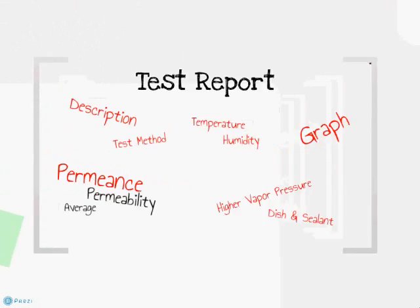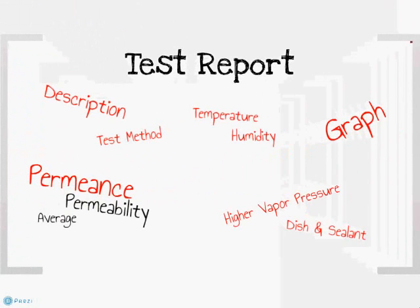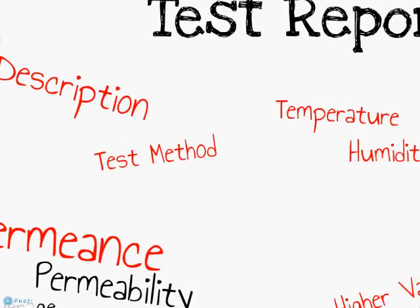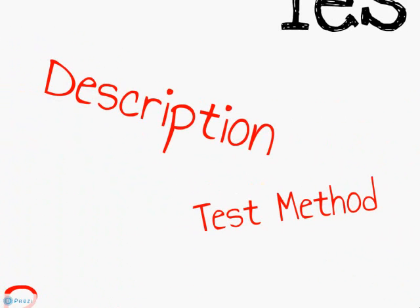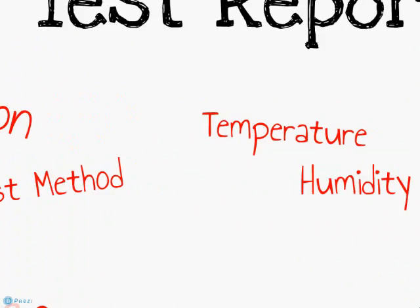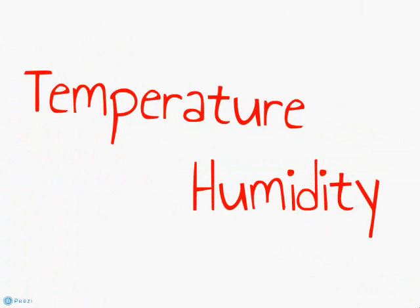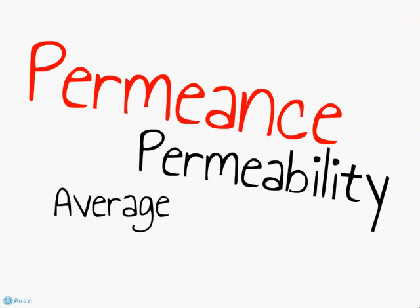The test report for the results of ASTM E96 should contain, at a minimum, a description of the material tested, the test method used, the temperature and relative humidity of the test chamber, the permeance and permeability if allowed,